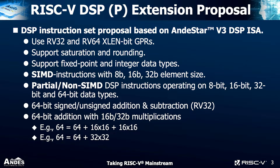For RV32 and RV64, the instructions are a little bit different. For RV32, we have 64-bit signed and unsigned addition and subtraction instructions, and also 64-bit addition with 16-bit and 32-bit multiplication instructions.